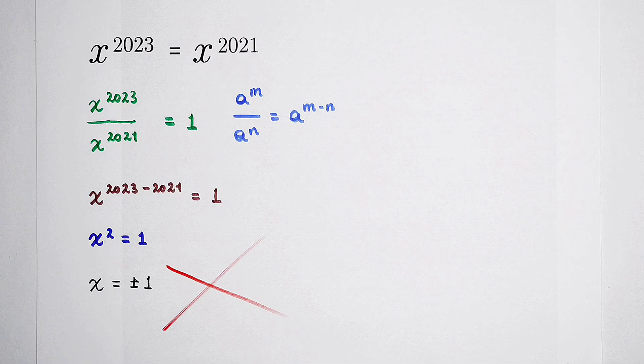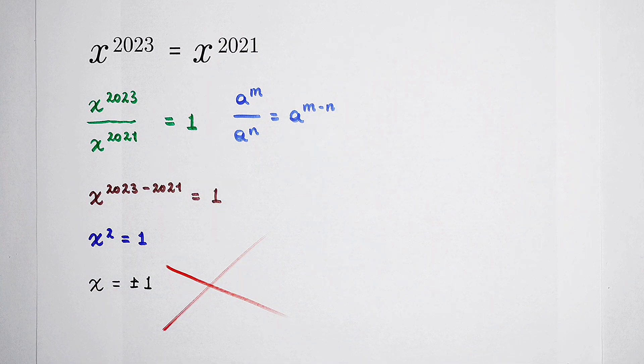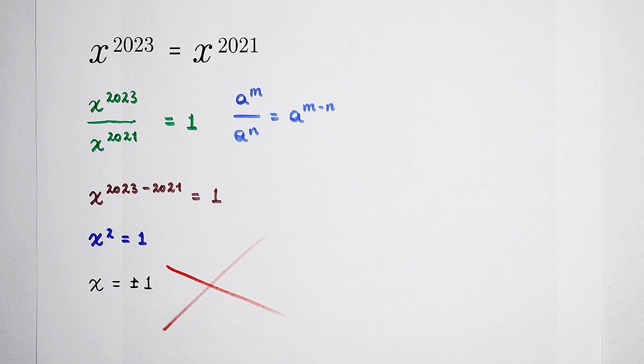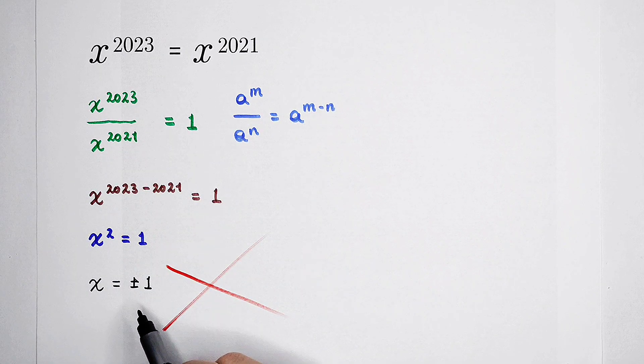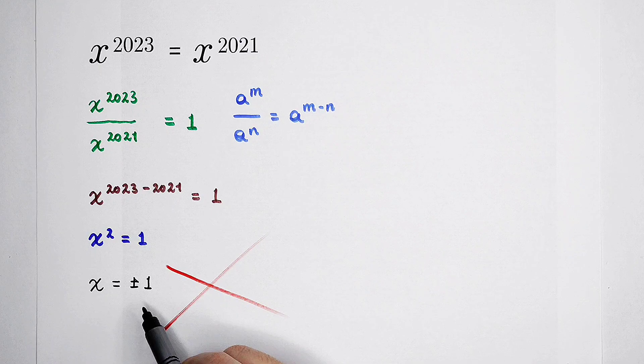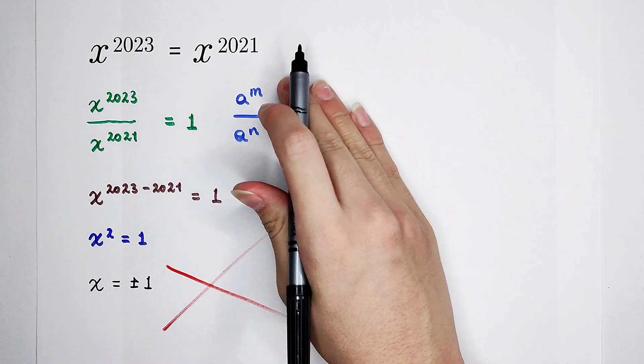Now you have two possibilities to solve this equation correctly. You can discuss the cases. First case, when x is not equal to 0 and x is equal to positive or negative 1. And the second case is when x is equal to 0 and this equation is correct.